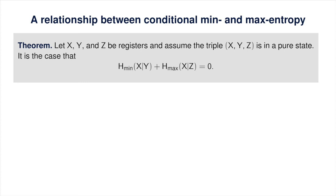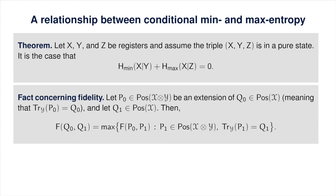Specifically, suppose we have some positive semidefinite operator q0 acting on space x, as well as an extension p0 of q0 — meaning p0 is a positive semidefinite operator on x tensor y such that tracing out y leaves q0. Suppose moreover we have a second positive semidefinite operator q1 on x. The fact says that maximizing the fidelity between p0 and p1 over all extensions p1 of q1 gives exactly the fidelity between q0 and q1. This follows by combining Uhlmann's theorem with the fact that fidelity is non-decreasing under partial tracing.